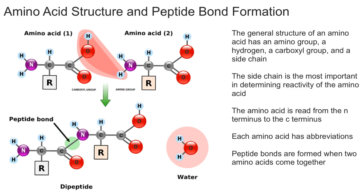All amino acids have three things in common. All amino acids have an amino group — as you can see, this NH2 is an amino group. Additionally, all amino acids have a carboxyl group, the COOH. And lastly, all amino acids have a hydrogen. These are all attached to a central carbon.